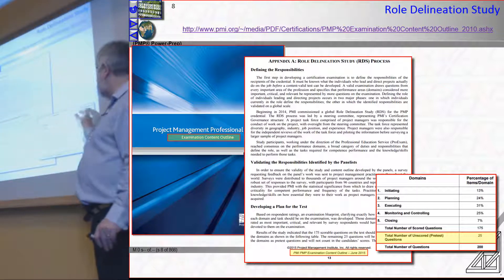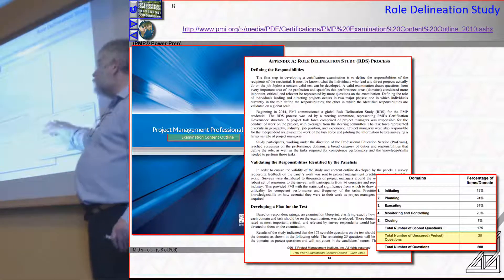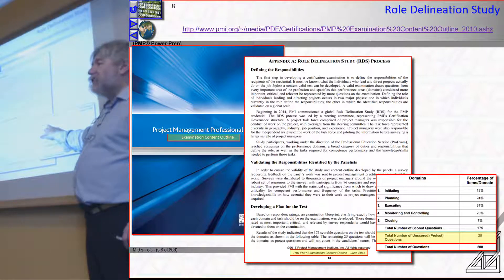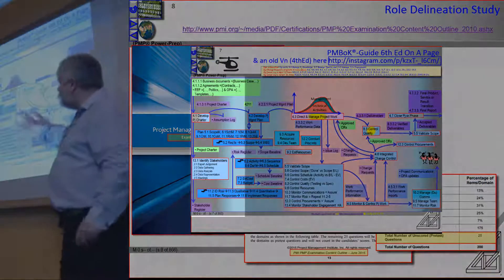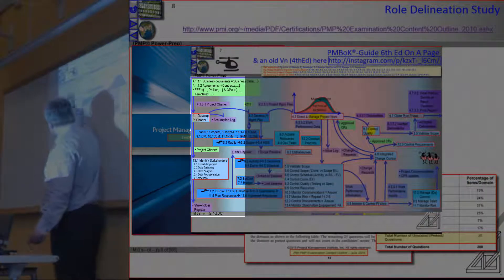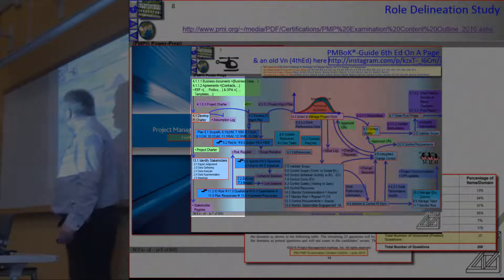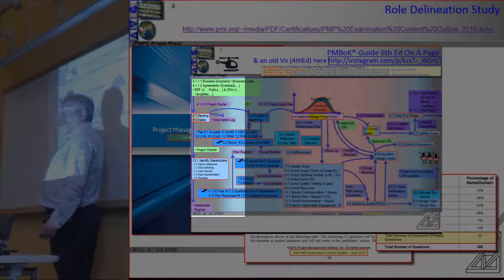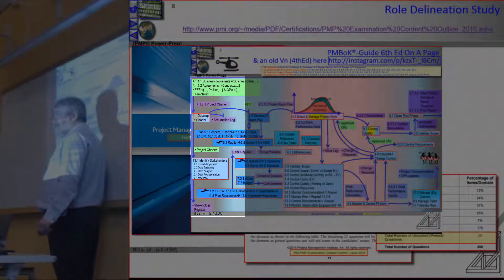What it tells us is the initiating domain contains 13% of the exam questions you're going to get, and you're going to get 200 questions, so you're going to get 26 questions on initiating. But it's the initiating domain, and we just had the conversation that says when a project manager is doing this stuff, they cannot be ignoring risk. So the initiating domain says I'm preparing to get approval at this point, and in order to get approval, I won't have forgotten about risk, even though risk is not in the initiating process group — it's in the initiating domain.